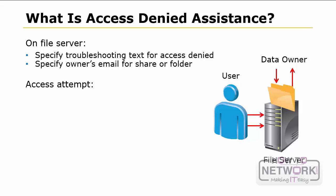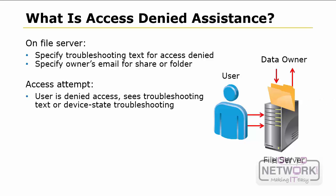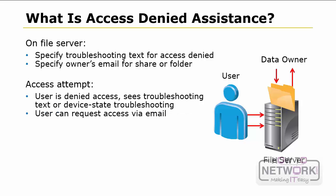When users receive this error, they typically try to contact the administrator to obtain access. However, administrators usually do not approve access to resources, so they redirect users to someone else for approval. In Windows Server 2012, there is a new feature to help users and administrators in such situations. This feature is called Access Denied Assistance. It helps users respond to access denied issues without involving IT staff, by providing information to users about the problem and by directing them to the proper person.